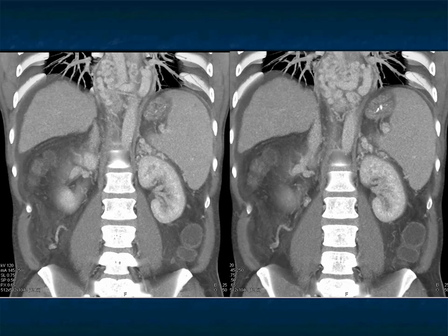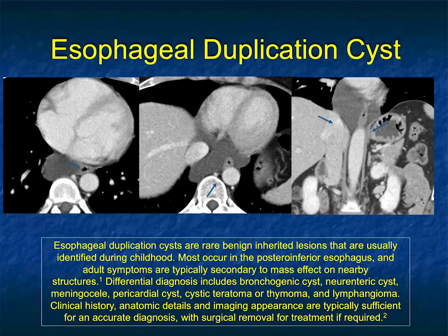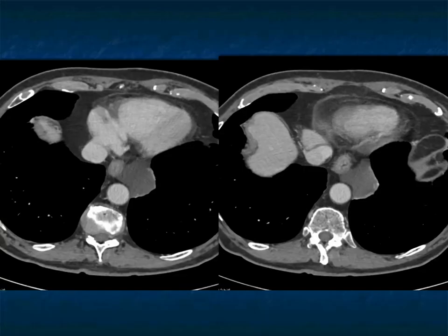Bronchogenic cysts are commonly discussed, but esophageal duplication cysts can look identical to them. Bronchogenic cysts are most common in the right paratracheal space and subcarinal region. An esophageal duplication cyst closer to the GE junction is a better location for that diagnosis. Bronchogenic cysts, pericardial cysts, and neuroenteric cysts can all look very similar. Here's another example of an esophageal duplication cyst — water density, well-defined — very nicely shown on these images.